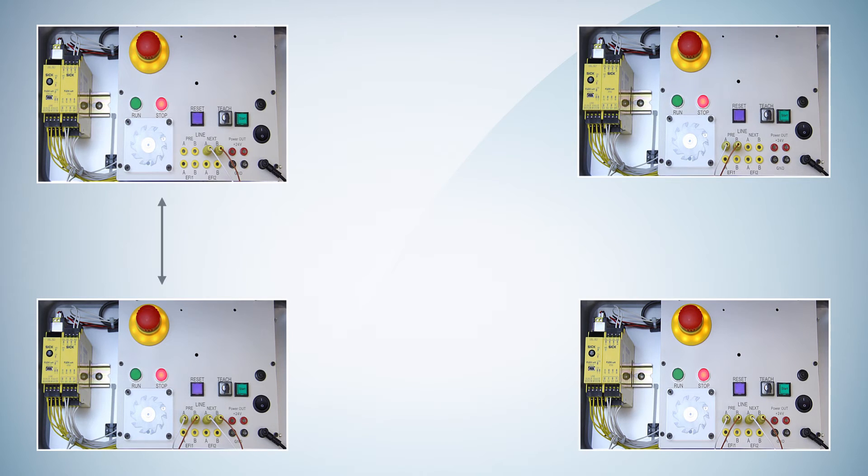So for example, the second station communicates with the previous station 1 and the next station 3. Each station communicates only with two direct neighbors.